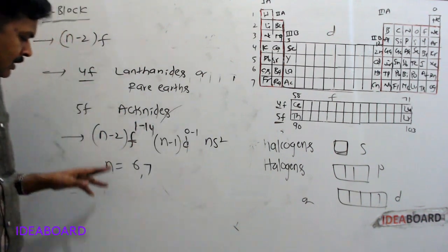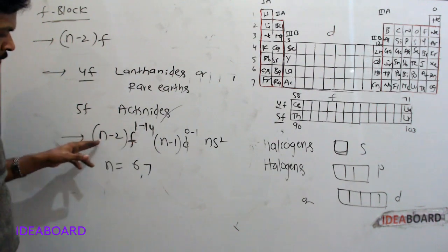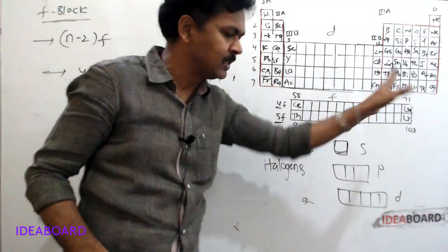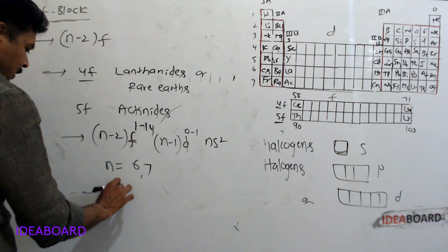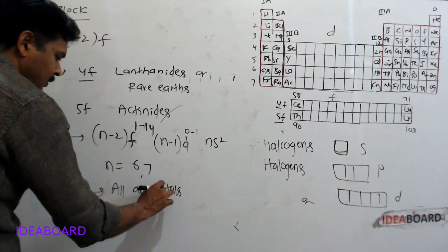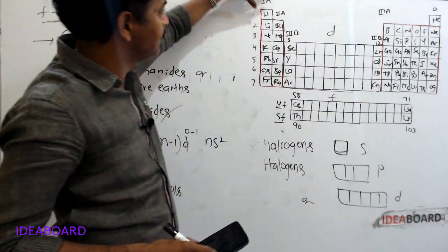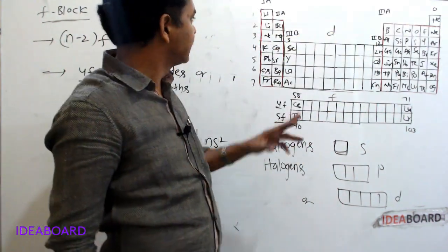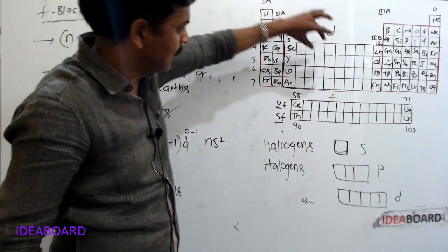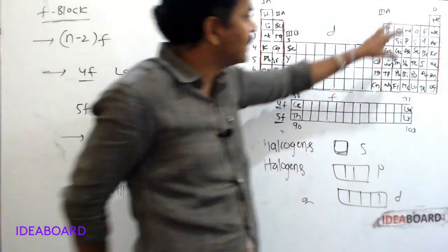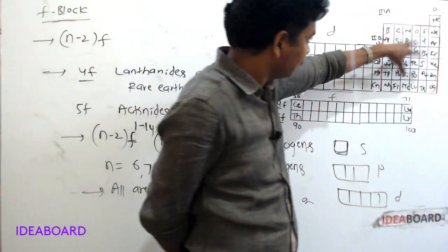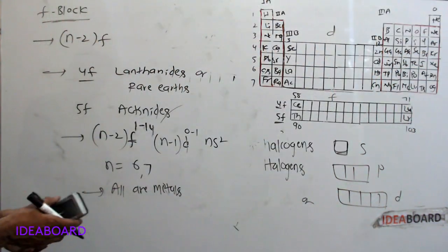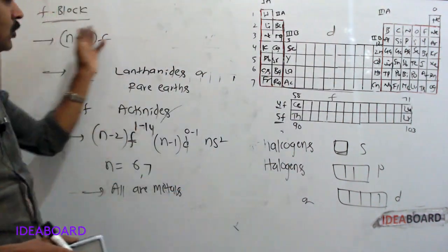In conclusion, except hydrogen, all S block elements, all D block elements, and all F block elements are metals. Only the P block contains all types of elements — metals, nonmetals, and metalloids. This completes the classification of elements into S, P, D, and F blocks.